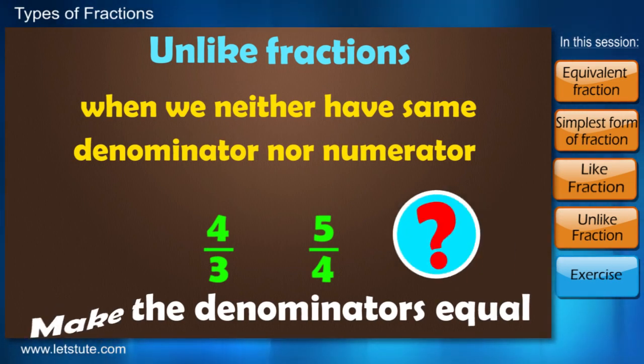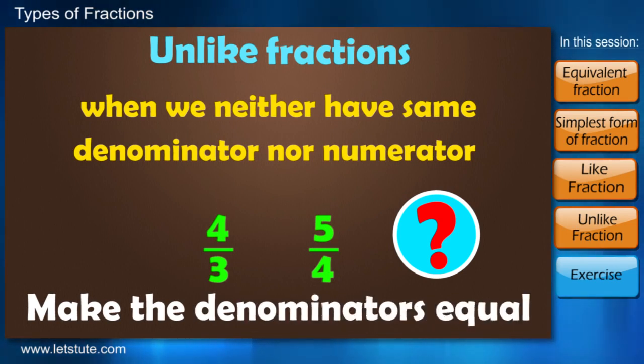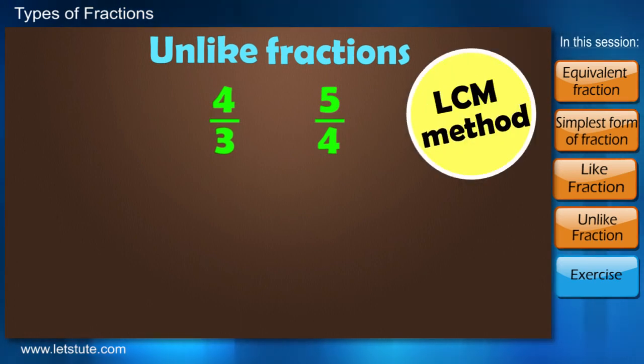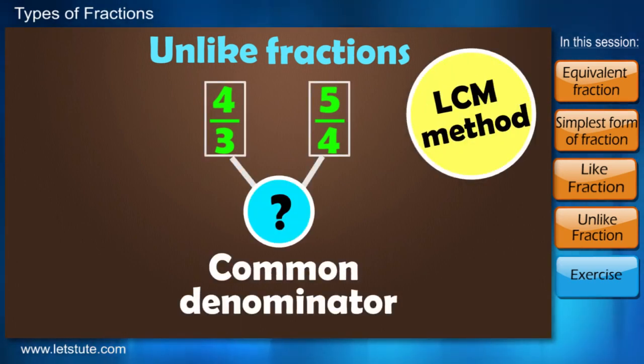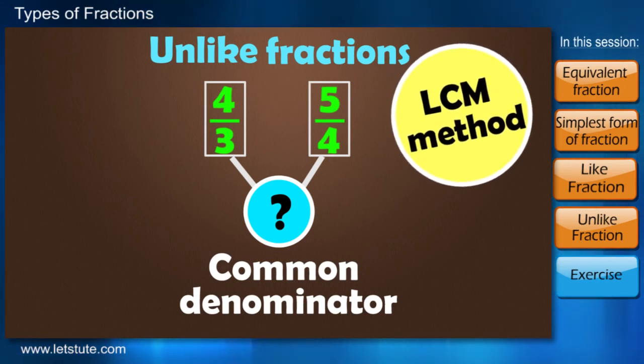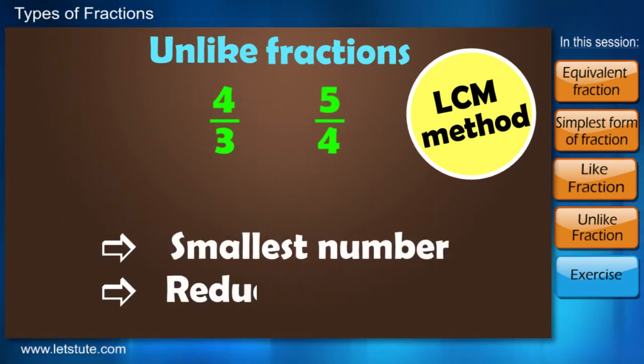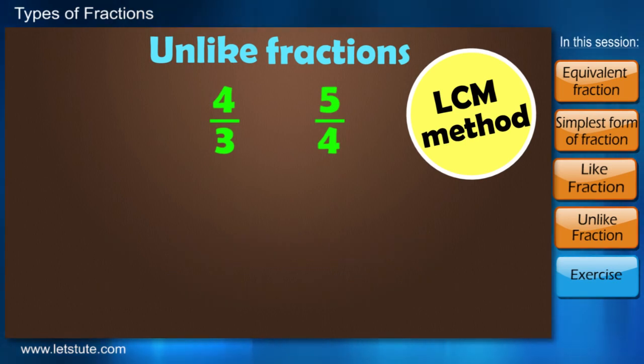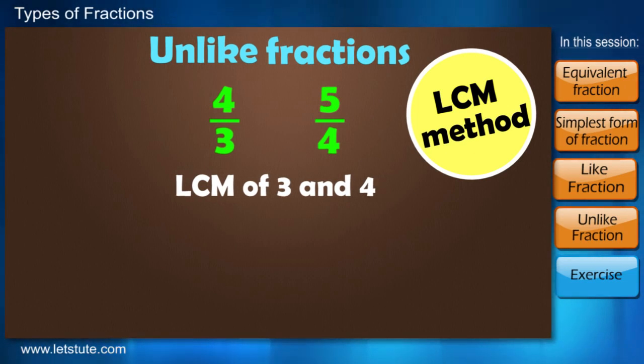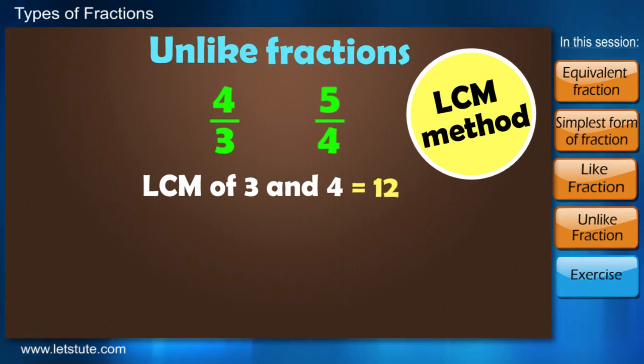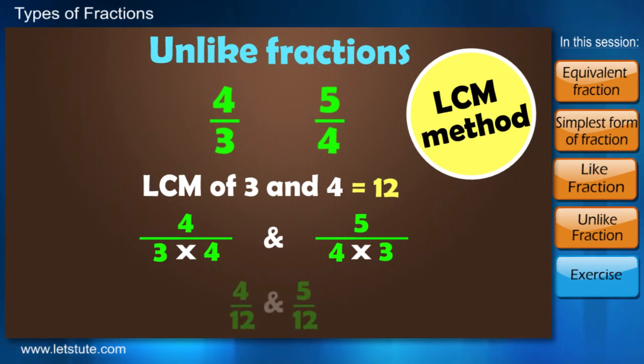If we can somehow make the denominators equal, then we will surely be comparing these fractions as like fractions. Here we can convert any fraction into like fraction. Can you think of any idea how we can make the denominators equal? Here we are going to use LCM method to find a common denominator of both the fractions. But why are we using LCM? LCM will give us the smallest number and it also reduces a lot of calculation. So now we will take LCM of 3 and 4 because they are the denominators. Now LCM of 3 and 4 is 12, right? Now we have to make the denominator as 12 in both the fractions, so we will multiply the denominators by 4 and 3 respectively.